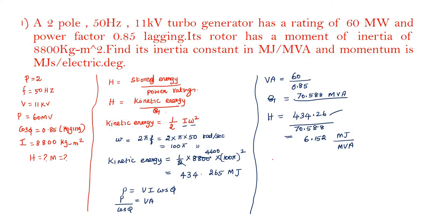Next, I am going to find out momentum. What is the formula for momentum? How to find out? H is equal to kinetic energy, which is half into I into omega square, divided by G. What is I omega? Here, I is the moment of inertia, omega is the angular frequency. That is equal to momentum M.